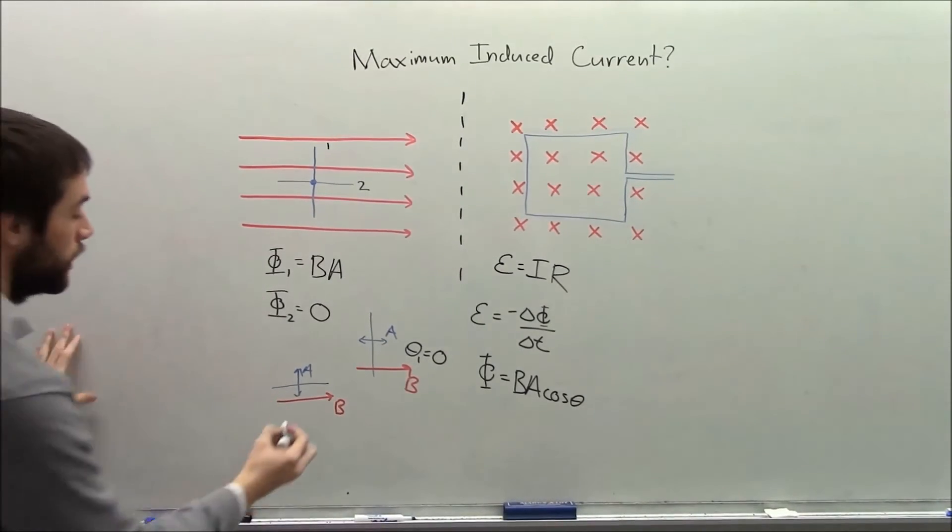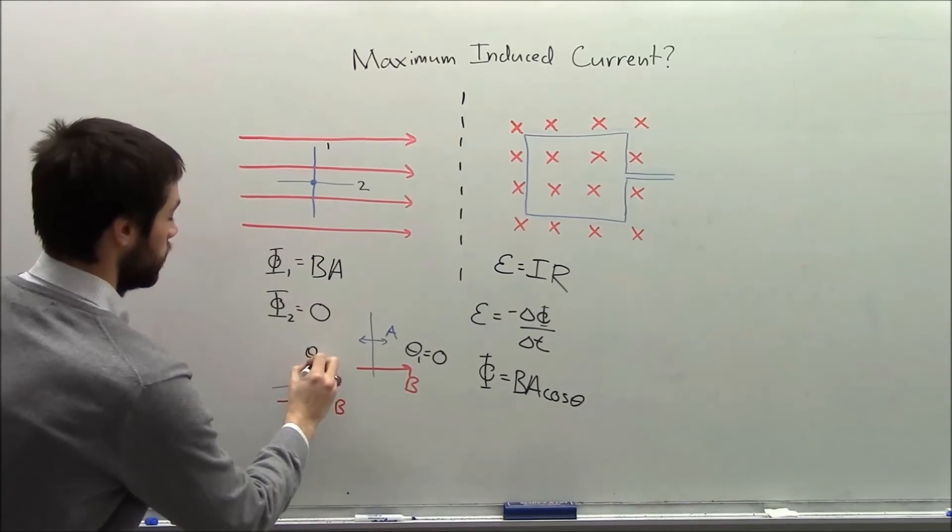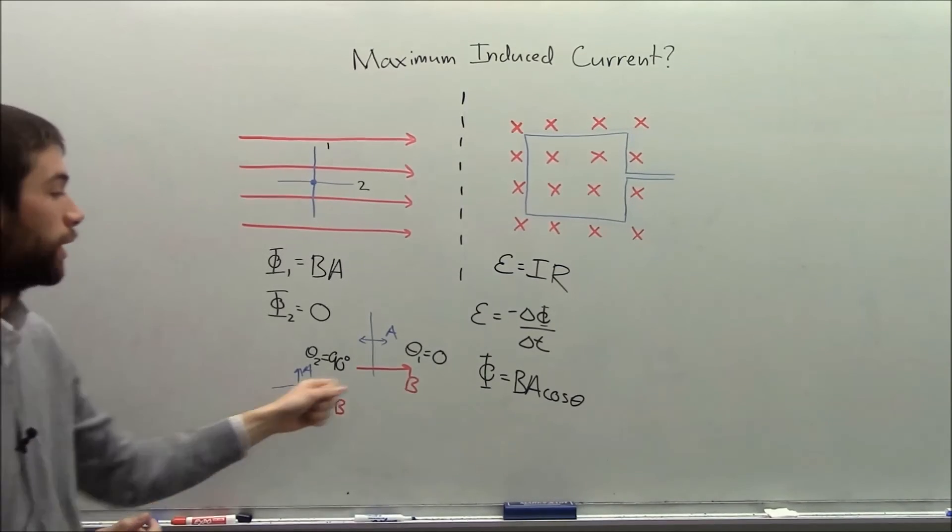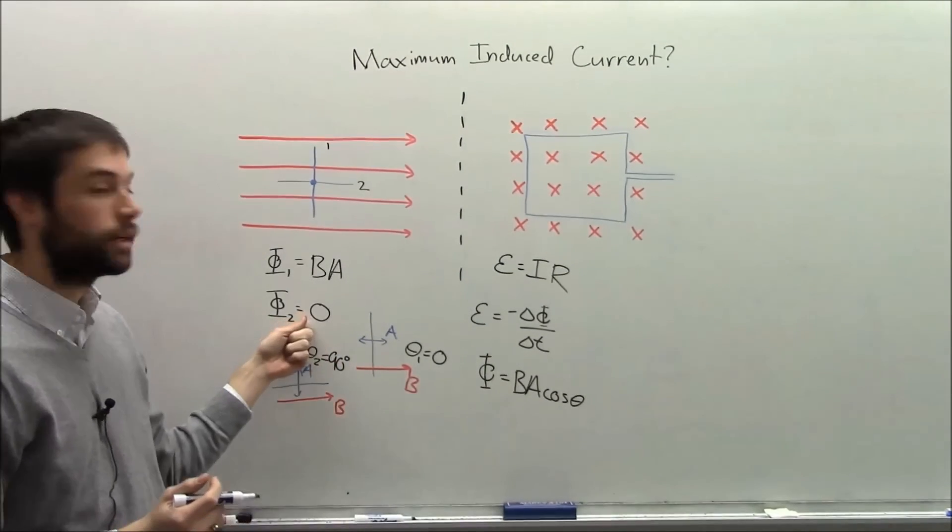And now you can see the angle here is 90 degrees. So now when I take the cosine of 90 degrees, I'm going to get 0.